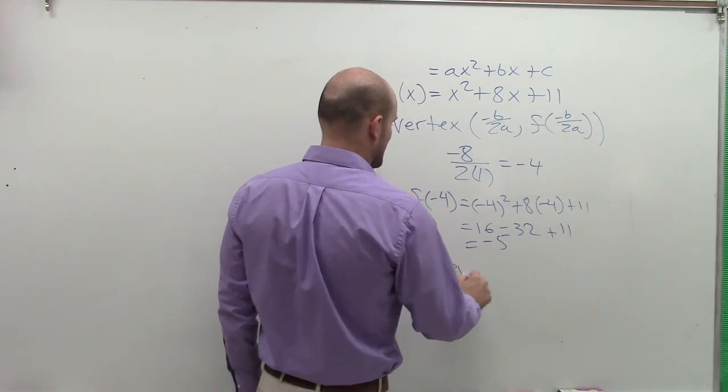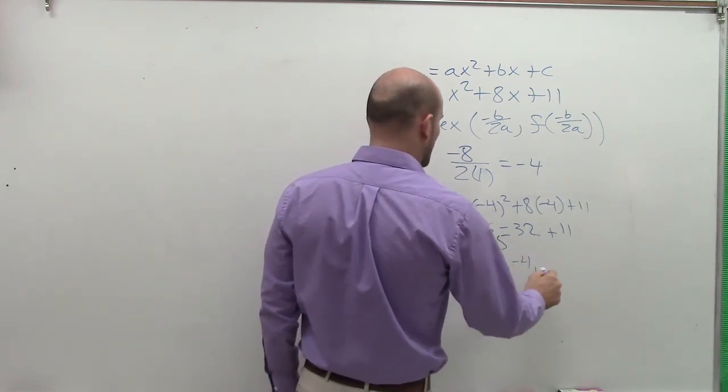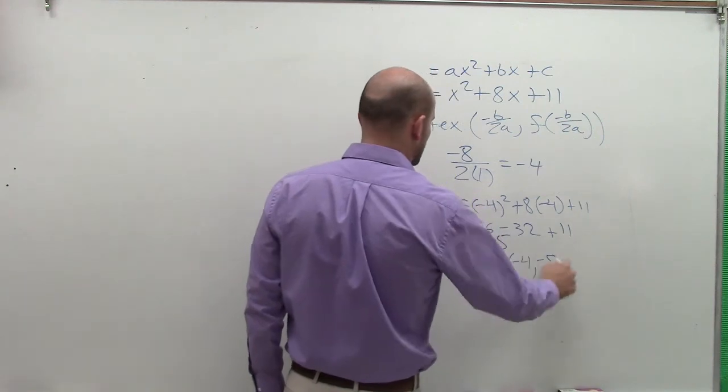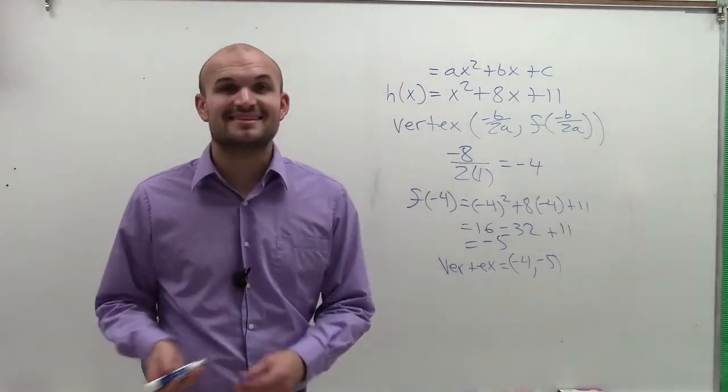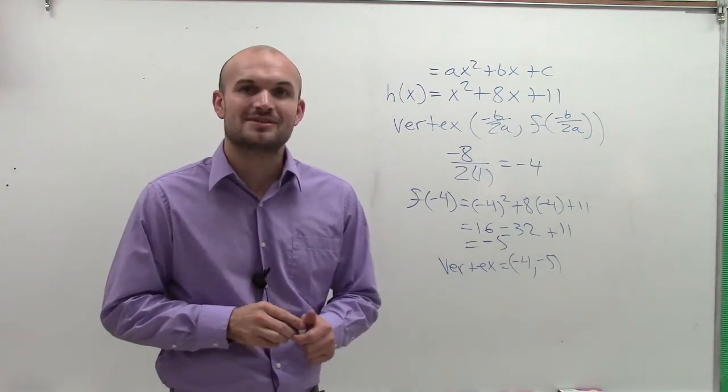Therefore, my vertex equals negative 4 comma negative 5. And there you go, ladies and gentlemen. That's a quick, easy, simple way to find the vertex.